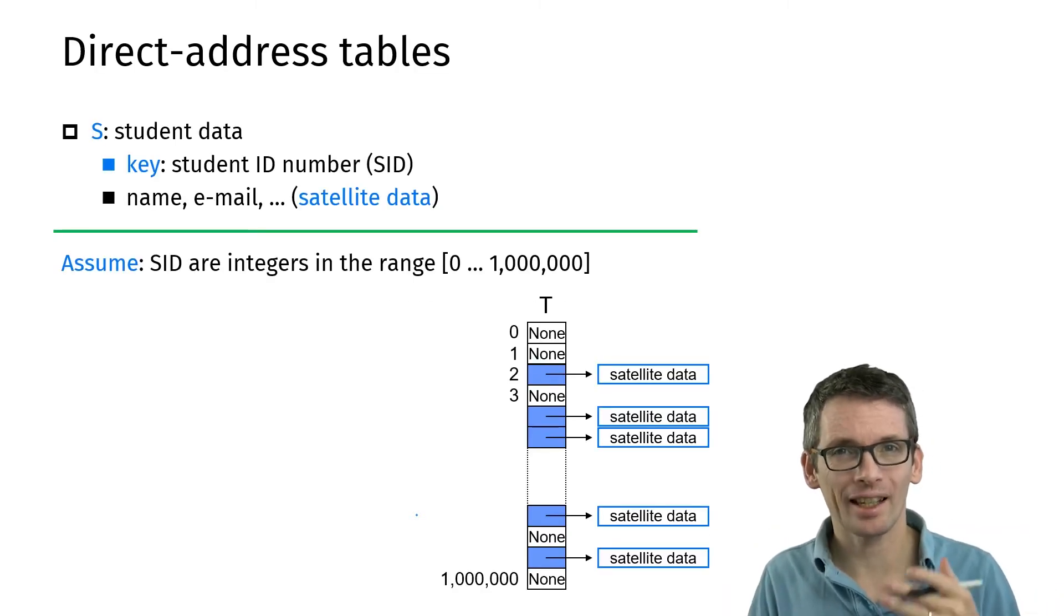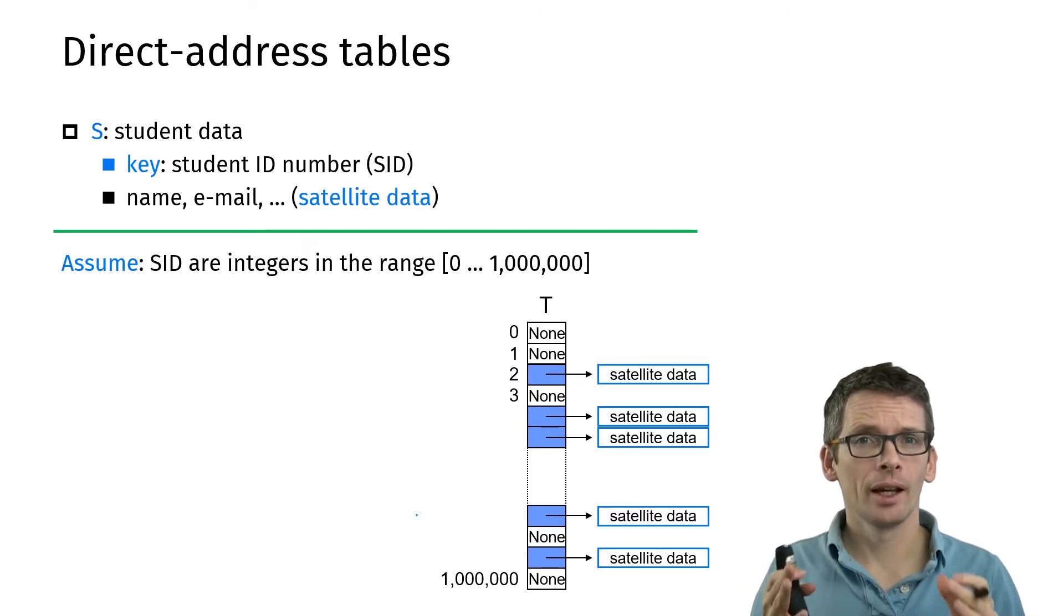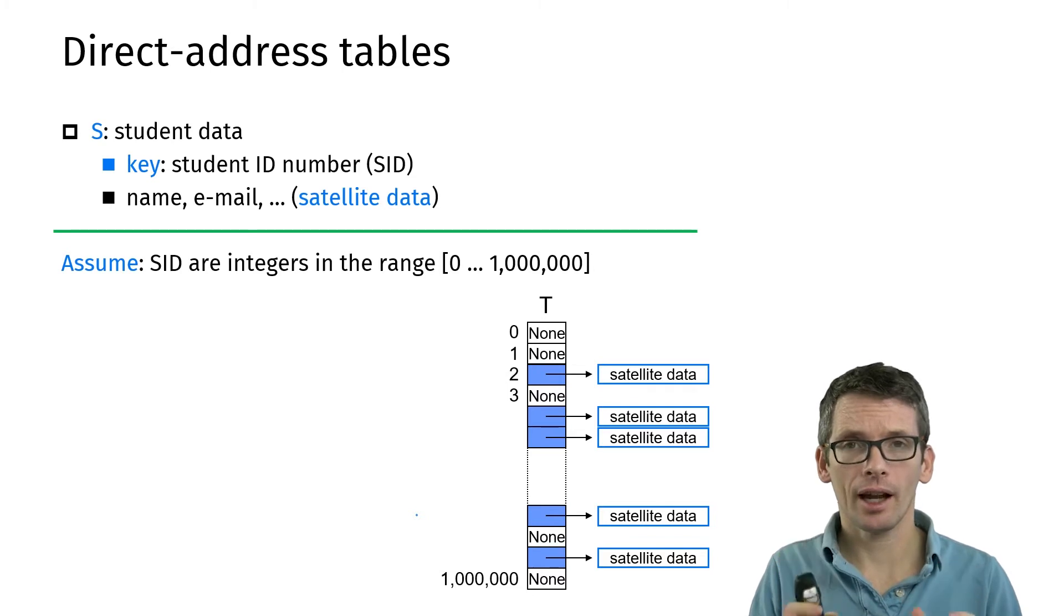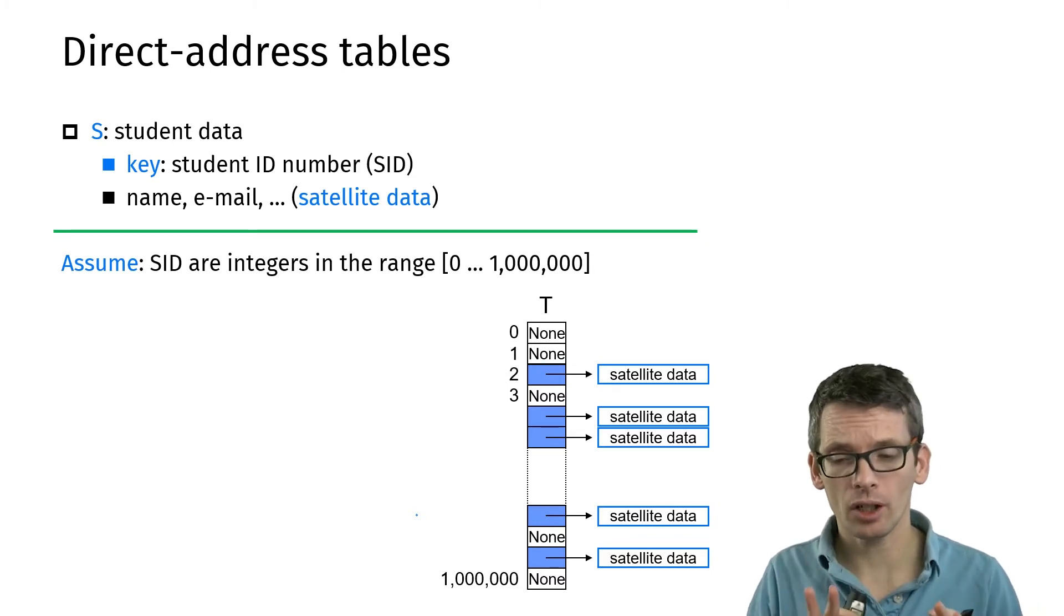So what is a hash table? I'm going to start with something that is not quite a hash table. Hash tables generalize arrays, and a very simple way to get a search structure or dictionary in an array is a direct address table. That's not quite a hash table yet, but that will be our starting point.